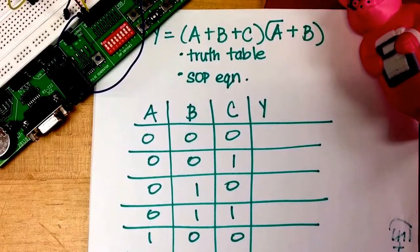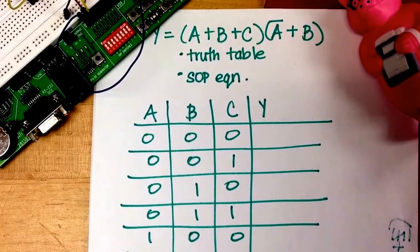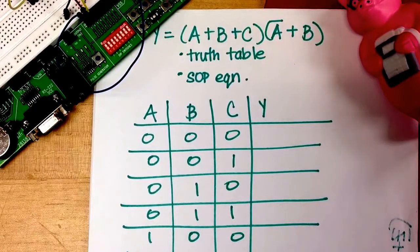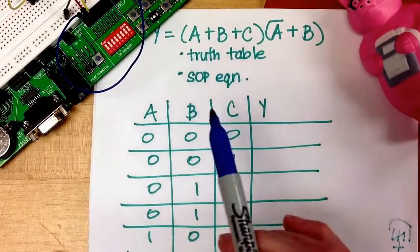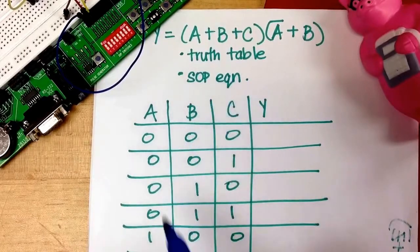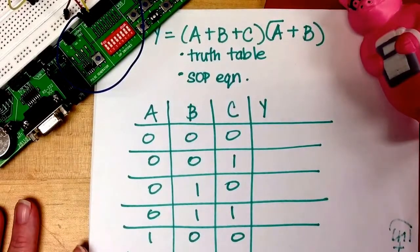So let's look at another example taking this product of sums equation. Let's make a truth table and then write the sum of products equation.